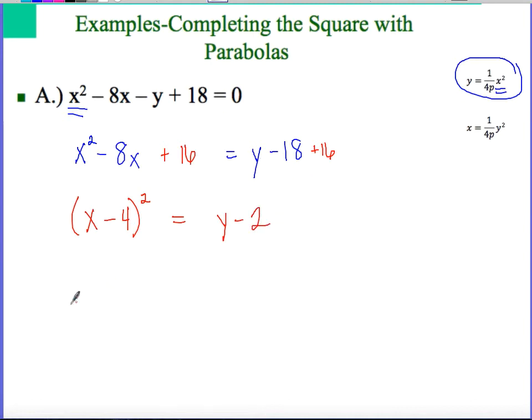Now, by looking at that, I can tell that my vertex of this parabola is going to be at (4, 2). This example doesn't ask me for specific things, but just to make sure I can find everything I'm looking for, my vertex is going to be at (4, 2).